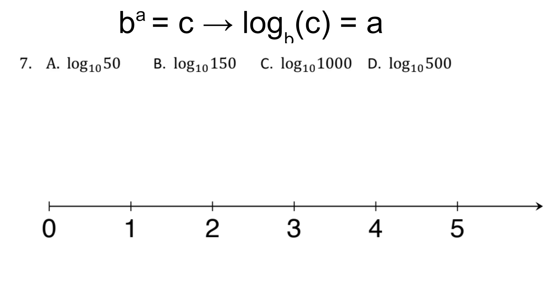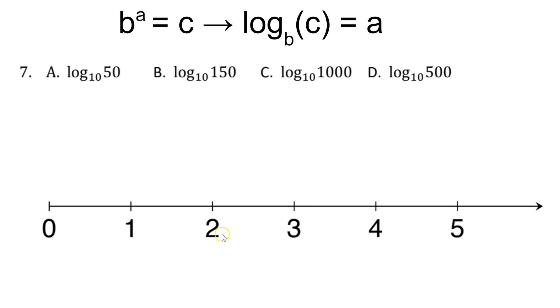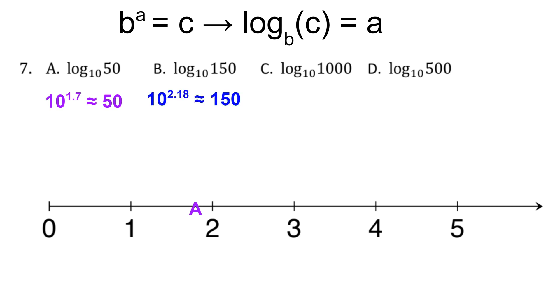Question 7. Again, we're using the same type of thinking. Now we're looking at all base 10 expressions. 10 to the 1.7 is approximately 50. That's rounded. So we could place point a in between 1 and 2 but closer to 2. 10 to the 2.18 is approximately 150. We could therefore place b in between 2 and 3.